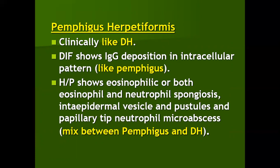Pemphigus herpetiformis is another variety of pemphigus. Clinically it looks like dermatitis herpetiformis with itchy vesicles and pustules on the extensor surfaces. But direct immunofluorescence shows IgG deposition in an intracellular pattern as seen in pemphigus vulgaris. On histopathology, eosinophilic or mixed eosinophilic and neutrophilic spongiosis is seen, along with intraepidermal vesicles and pustules and papillary tip micro-abscesses—a mixture between pemphigus vulgaris and dermatitis herpetiformis, but with DIF findings of pemphigus.